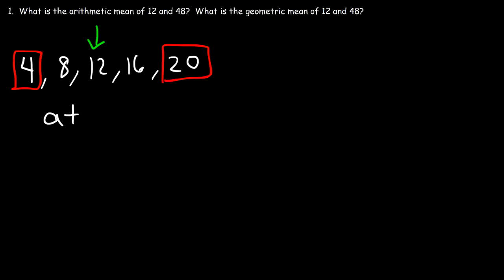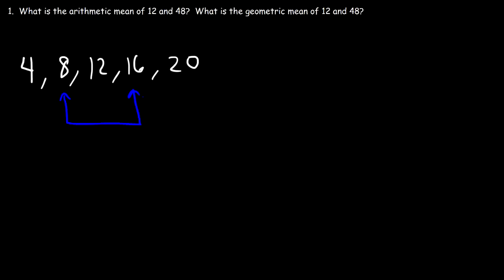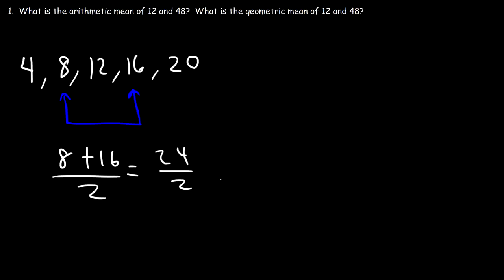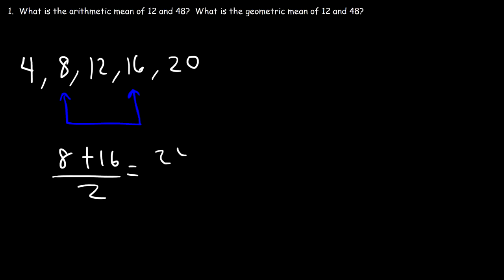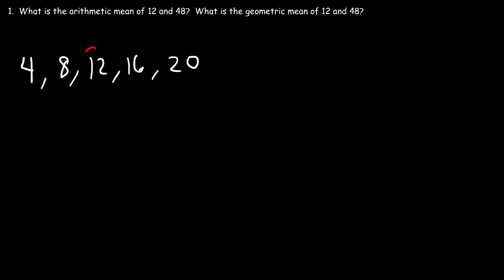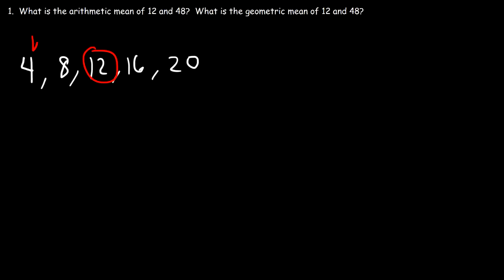We can also calculate the arithmetic mean of 8 and 16 — that gives us 12 as well: 8 plus 16 is 24, divided by 2 is 12. So the arithmetic mean of a sequence is basically the middle number between two numbers in an arithmetic sequence.